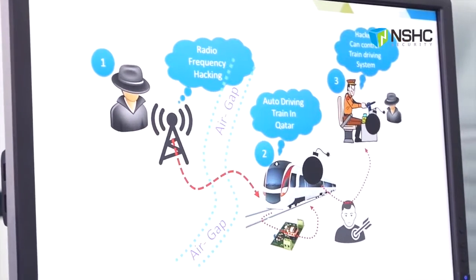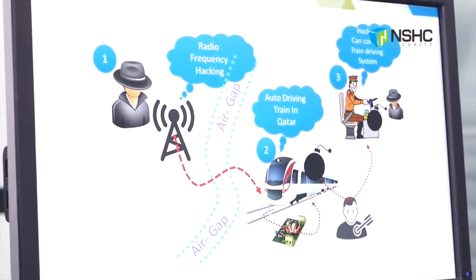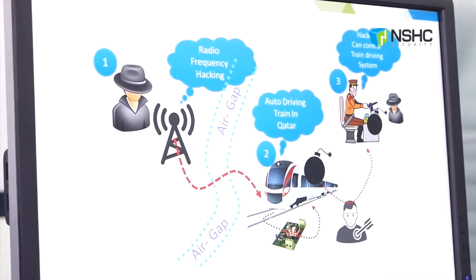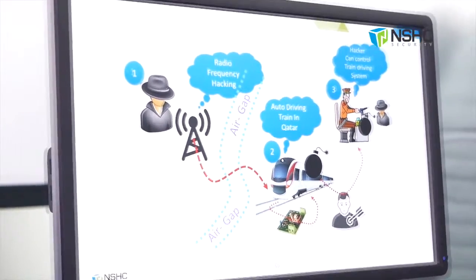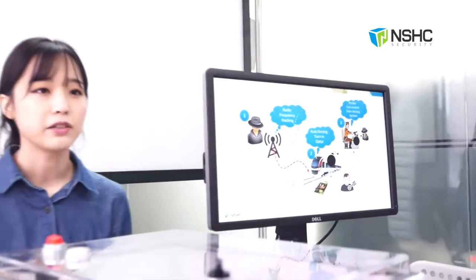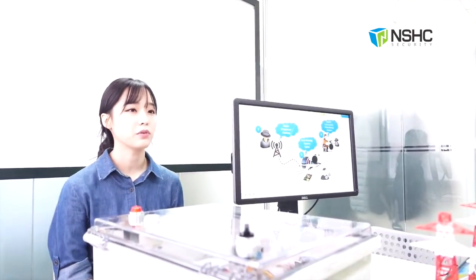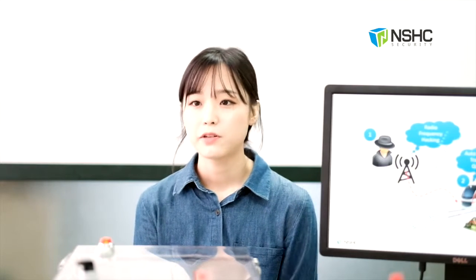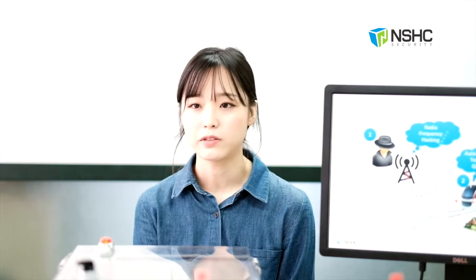by using RF, which stands for radio frequency. The criminal will get physical access around the train system and then analyze the RF signal from the train system. When the criminal is done with RF analysis, they will capture specific signals between the train and the control system to isolate the control. After the criminal captures enough RF signals, the criminal will replay all the signals to malfunction the train system.